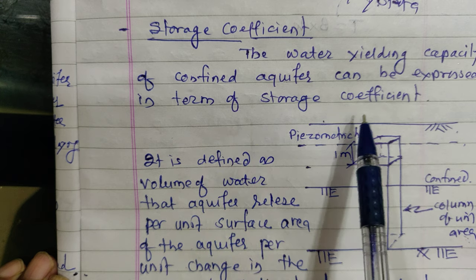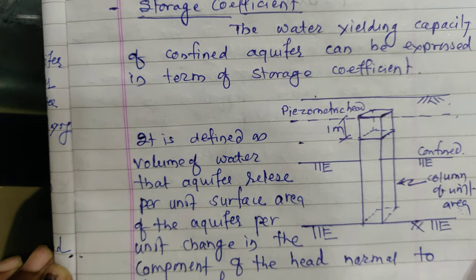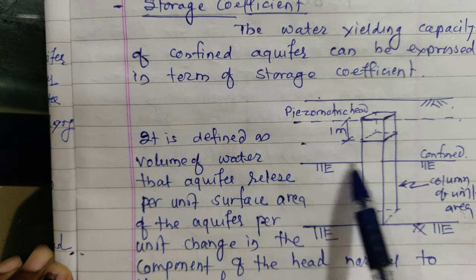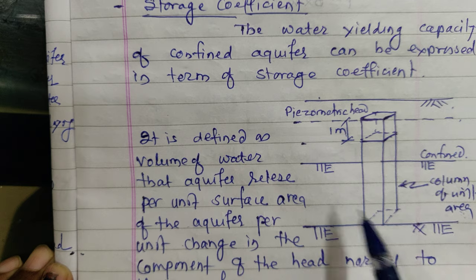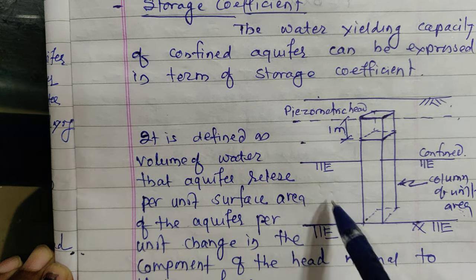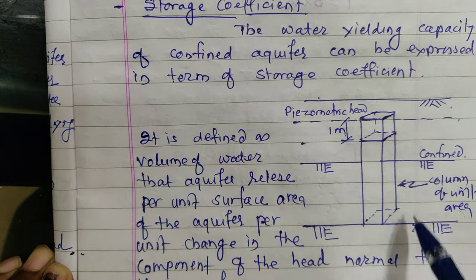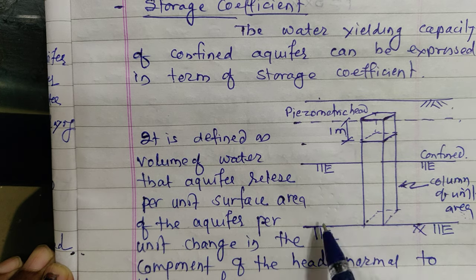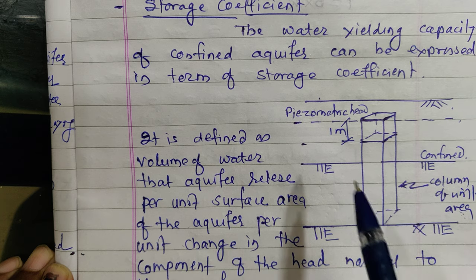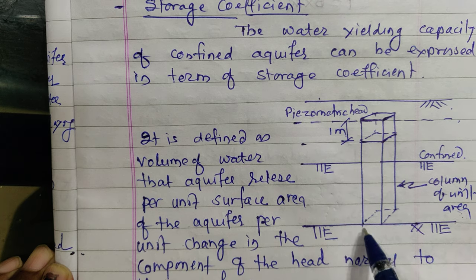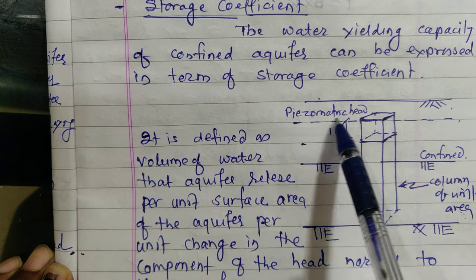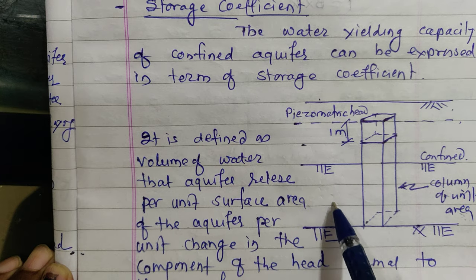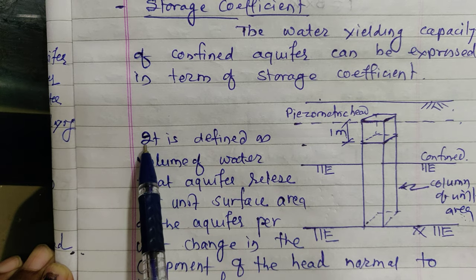Looking at this figure, there are two hard strata layers. In between these two hard strata there is a layer which is confined — this is a confined aquifer, confined between two impervious layers. When a well is drilled, the water table behaves accordingly. There is also an unconfined aquifer shown alongside.